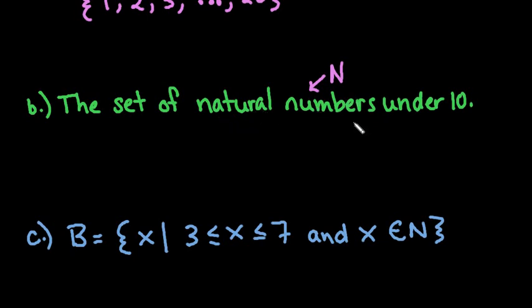Natural numbers are just counting numbers like 1, 2, 3, 4, 5, etc. They're basically integers but they don't include 0.